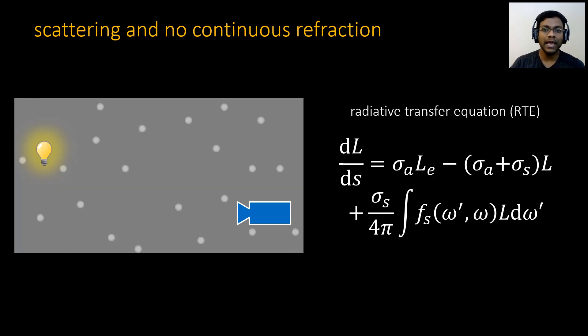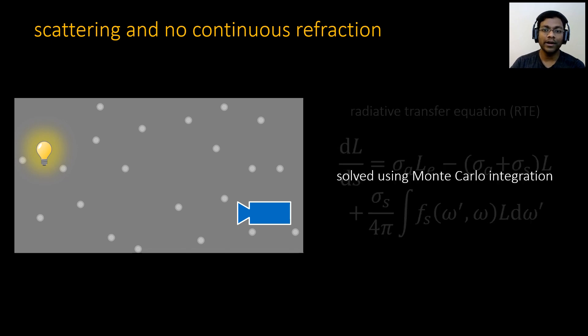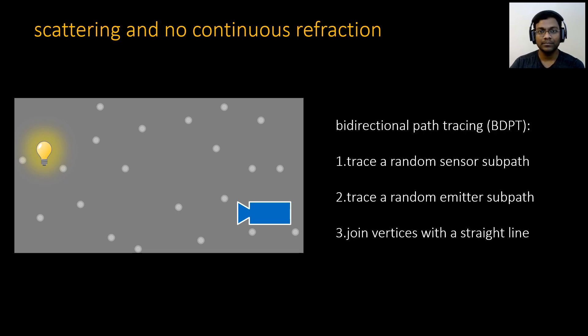Let's now consider the case of a medium where there is only scattering and no continuous refraction. Then we can model light transport using the radiative transfer equation. As many of you know already, we can numerically solve this equation with Monte Carlo integration using techniques such as bidirectional path tracing. In bidirectional path tracing, we iterate over sampling paths. To trace a path, we start from the sensor and trace a random sensor sub-path, and then we trace a random emitter sub-path. We join the vertices with a straight line to create a light path.